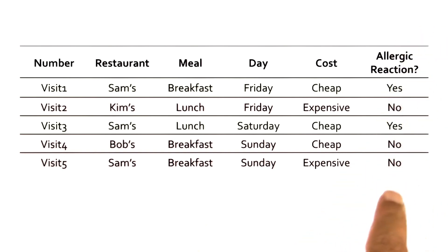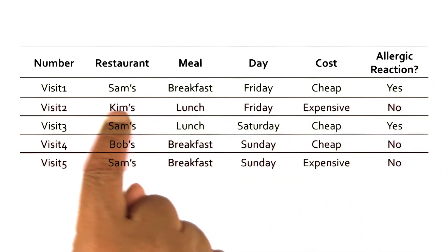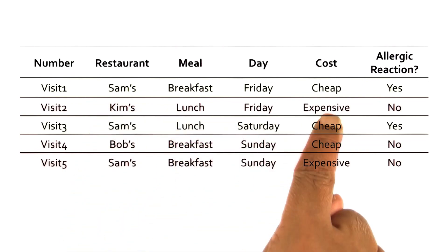However, in version spaces, you can notice that each successful example differs from the previous one in many features. Just look at the first two examples. They differ in many features: in the name of the restaurant, in the meal, in the cost.